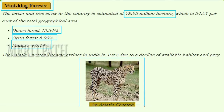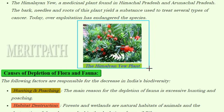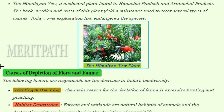The Himalayan yew is a medicinal plant found in Himachal Pradesh and Arunachal Pradesh. The bark, needles, and roots of this plant yield substances used to treat several types of cancers. Now let's look at the causes of depletion of flora and fauna — the factors responsible for the decrease in India's biodiversity.